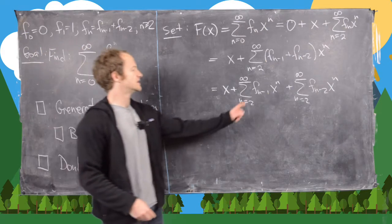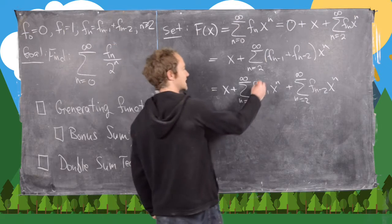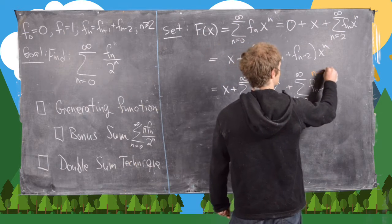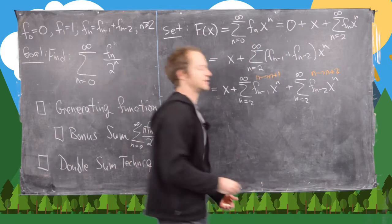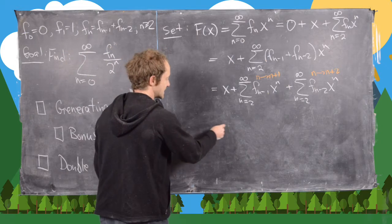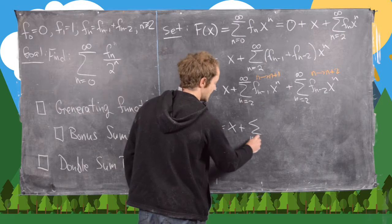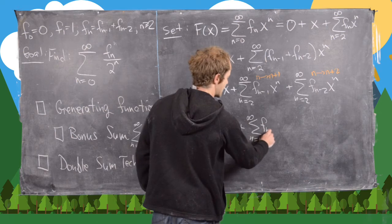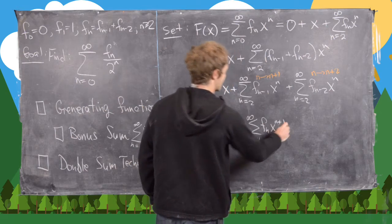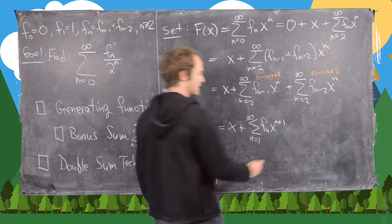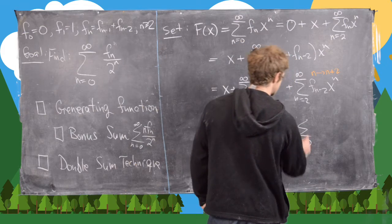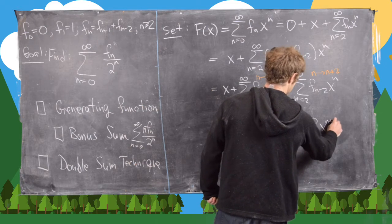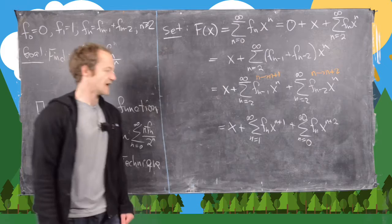We re-index both sums so each has f_n instead of f_{n-1} or f_{n-2}. In the first sum we replace n with n+1, giving the sum from n=1 to infinity of f_n·x^{n+1}. In the second we replace n with n+2, giving the sum from n=0 to infinity of f_n·x^{n+2}.